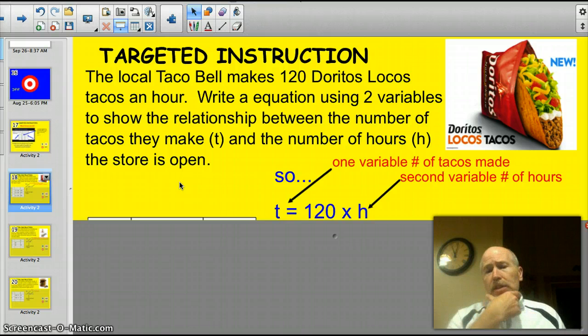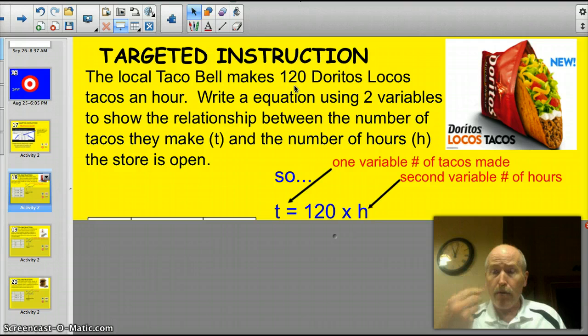Let's start off with our first example from the local Taco Bell. They make 120 Dorito Locos Tacos an hour. Write an equation using two variables to show the relationship between the number of tacos they make, T, and the number of hours the stores open, H. Now, the three most important things you'll be looking for tonight in these little story problems are number one, the numbers, and number two, the two variables.